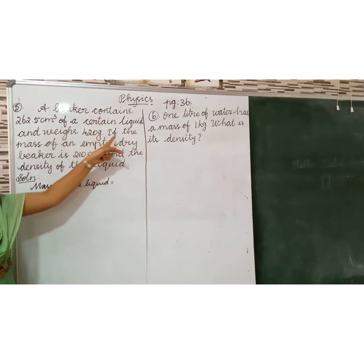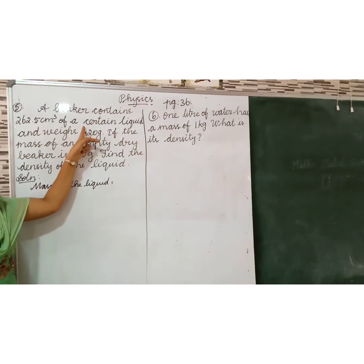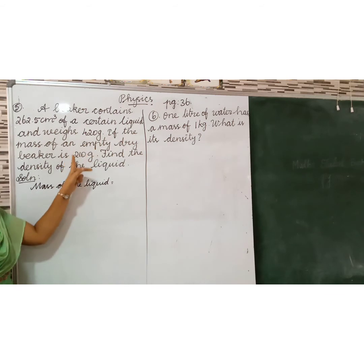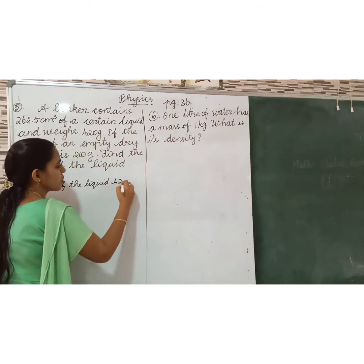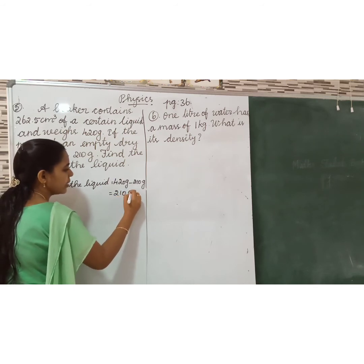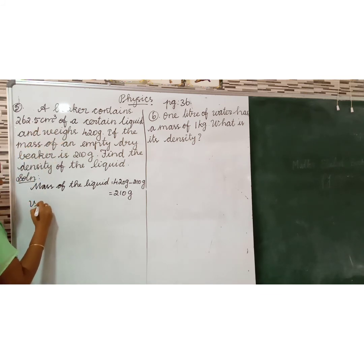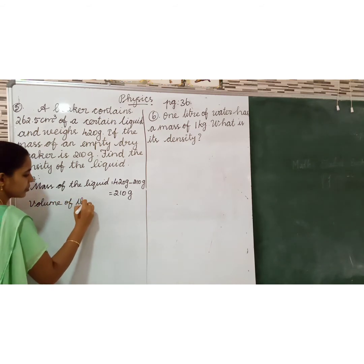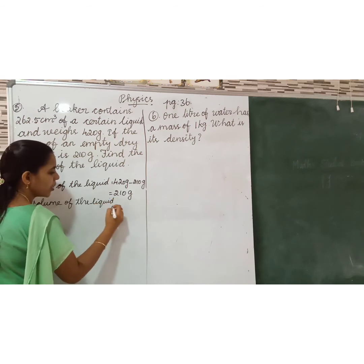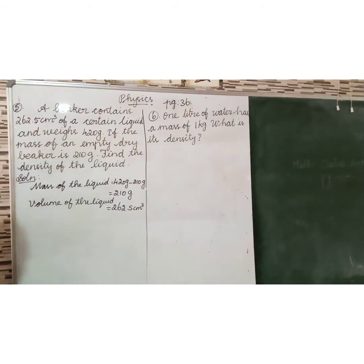The beaker with liquid weighs 420 gram, and the mass of the empty beaker is 210 gram. So the mass of the liquid is 420 gram minus 210 gram equals 210 gram. The volume of the liquid is equal to 262.5 centimeter cube.